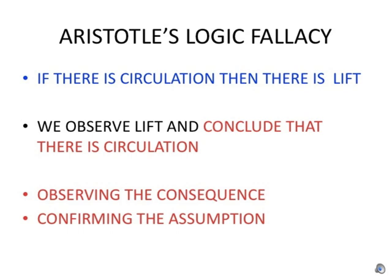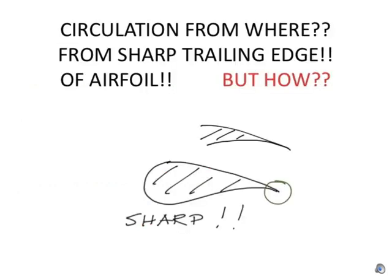Kutta and Joukowski thus made the correct observation that if there is rotating flow or circulation around the wing section, then there is lift. But then Kutta and Joukowski incorrectly concluded that since lift is observed, there must be circulation around the wing section. But this is one of Aristotle's logical fallacies of confirming the assumption by observing the consequence. The incorrect conclusion of circulation then asked for a physical mechanism generating circulation, and Kutta and Joukowski suggested that circulation maybe could be an effect of a sharp trailing edge, without, however, explaining how.